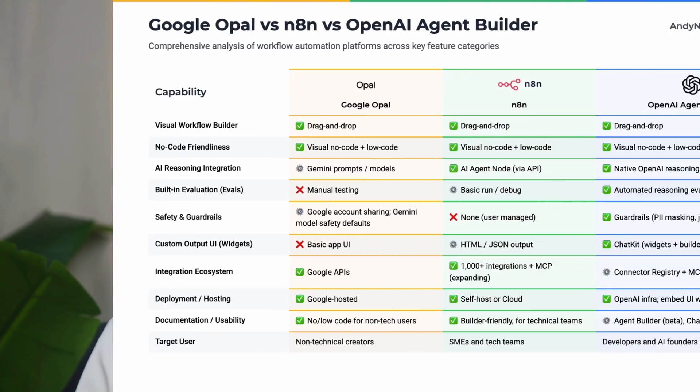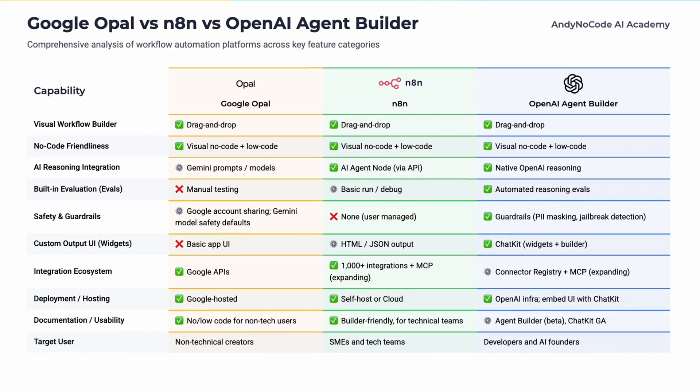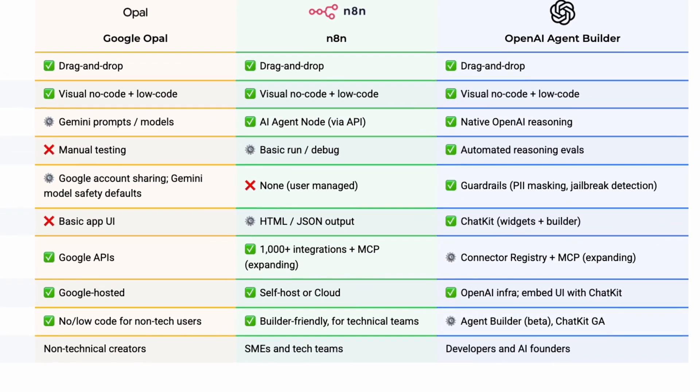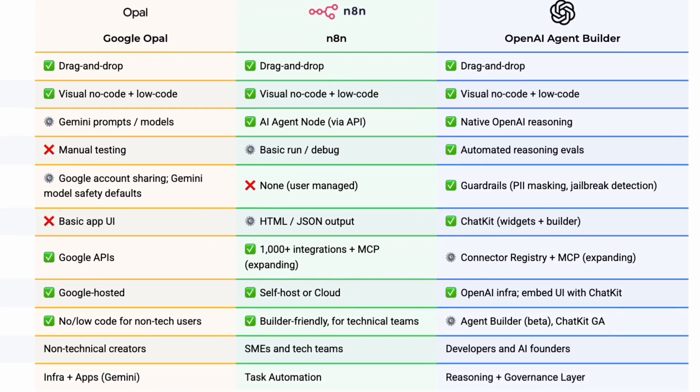All right, now you might still be wondering: Hey Andy, you have already done tutorials on Google OPPO and NN. So how is OpenAI's new Agent Builder actually different? That's a great question. And to answer it, let's line them up side-by-side and see where each one really stands out.